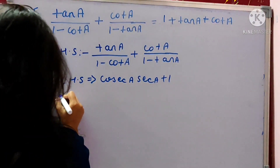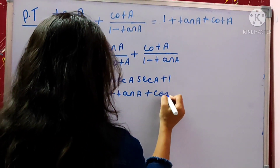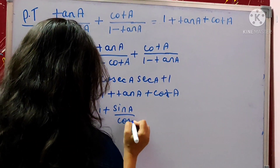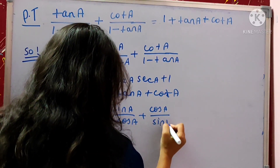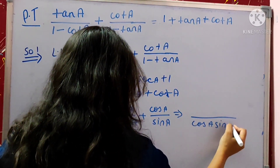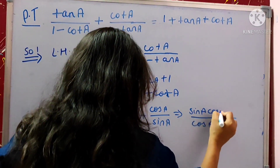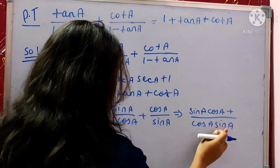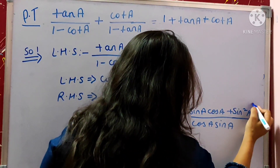Now moving towards the RHS part: 1 plus tan A plus cot A. Putting values: 1 plus sin A divided by cos A plus cos A divided by sin A. Taking the LCM, which is cos A sin A, we get: sin A cos A plus sin squared A plus cos squared A, all divided by sin A cos A.